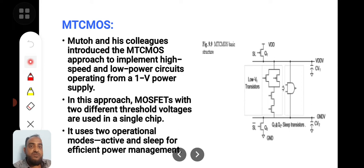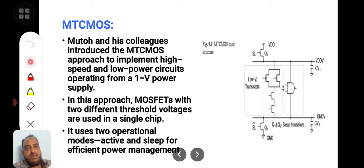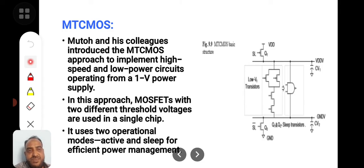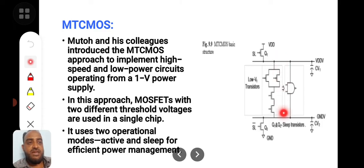Circuits operate from a 1-volt power supply, which is very less. Normally, the typical threshold voltage value is 20% of the supply voltage, that is 0.2 VDD. Here VDD is 1 volt, so 0.2 VDD will be 0.2 volts. The transistors operating at threshold voltages of 0.2 to 0.3 volts are used. This is very less — 0.2 to 0.3 volts threshold voltage will have large subthreshold leakage current, which happens when there is a direct power supply connection.